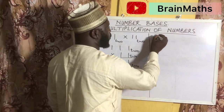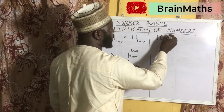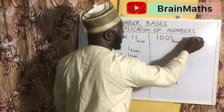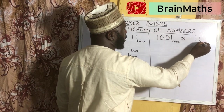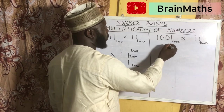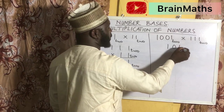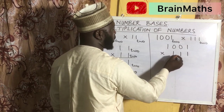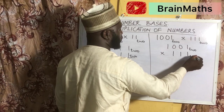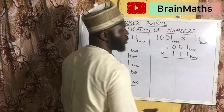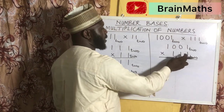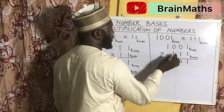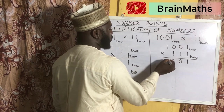Also, if you are given 1001 in base 2 to be multiplied by 111 all in base 2. For the first row: 1 times 1 is 1, 1 times 0 is 0, 1 times 0 is 0, 1 times 0 is 0, and 1 times 1 is 1.